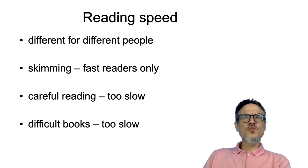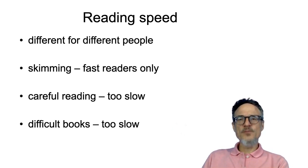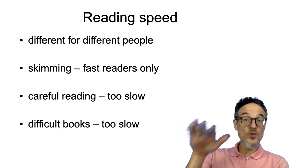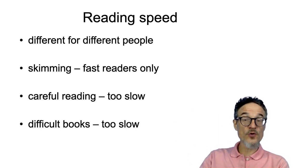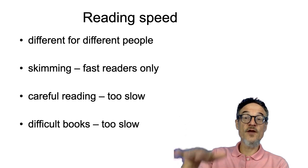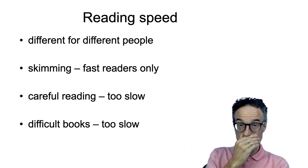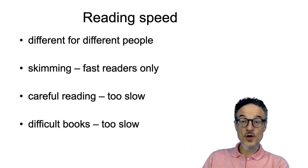It's worth remembering that reading speed is different for different people — there is no correct reading speed. Some people are fast readers, some are slow. It's also different for different books. Skimming is something only fast readers can do; you need to be a good reader first. If you're reading too carefully, you may be reading too slowly — so if you want to read faster, try to be less careful and worry less about understanding everything. Also, difficult books will slow you down, so reading easy books is very important to increase your reading speed.